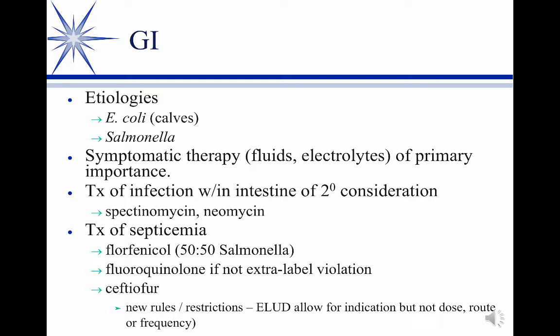Systemically, if you think they're septicemic or you have an invasive tissue form, then florfenicol if it's not a violation, or a fluoroquinolone — though technically that's complicated if they also have pneumonia. Ceftiofur would be a good choice from the septicemic standpoint — it'll get both the E. coli and probably systemic salmonella. We can use it extra-label provided we stay on dose, frequency, and withdrawal times. Probably ceftiofur would be most common, with florfenicol second.